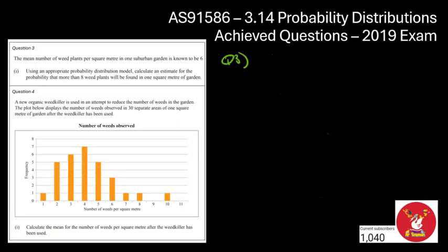Okay, we are now on to question number three, and we've got the mean number of weeds per square meter in a suburban garden is known to be 6. So that sounds like, I guess the word per gives it away. Maybe this is going to be a Poisson distribution question. And if that's the case, this mean is lambda, so that means we're going to have a lambda of 6. Use an appropriate distribution model. Calculate an estimate for the probability of having more than 8 weeds in a 1 meter squared of garden. So I guess the first thing to note, I'm definitely happy with my decision of a Poisson distribution question.